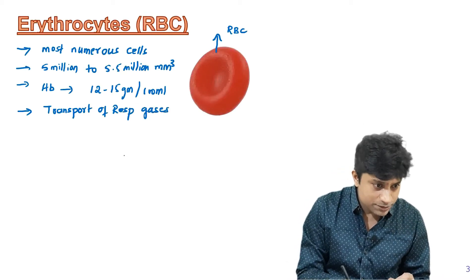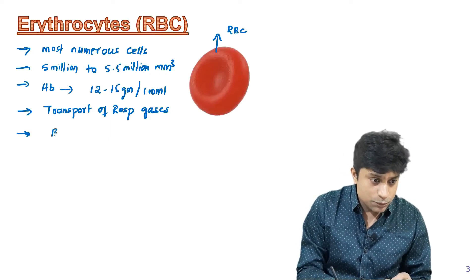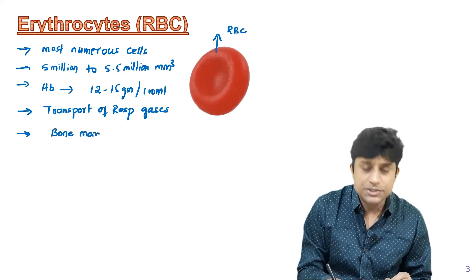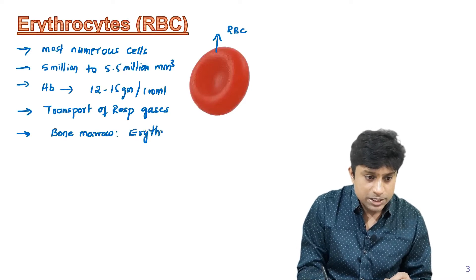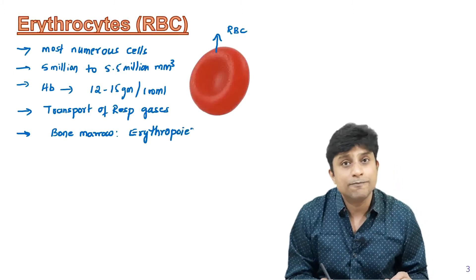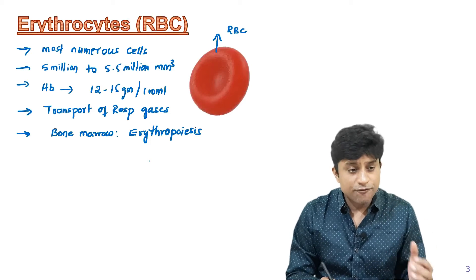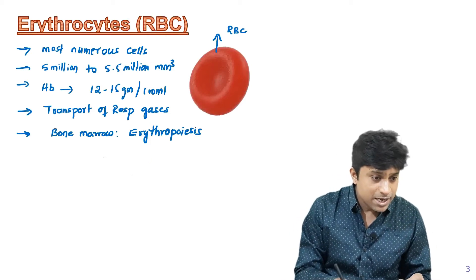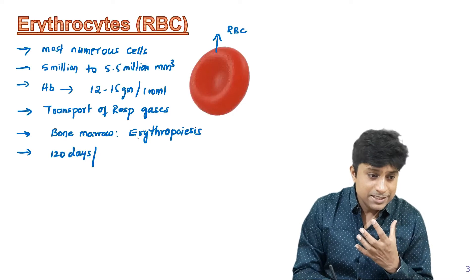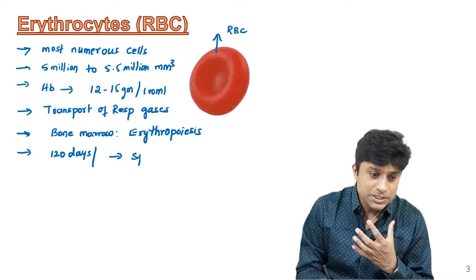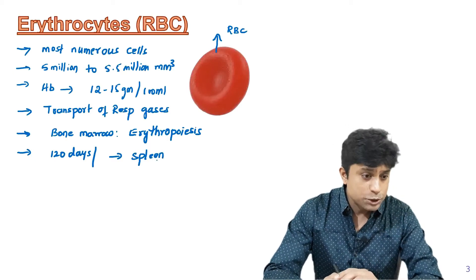RBC are formed in the embryonic stages and from the bone marrow. The process of formation of RBC is called erythropoiesis. In embryonic stages and earlier development, they are formed in the liver, and later on in the bone marrow. RBC live for 120 days, after which they are destroyed in the spleen — so the spleen is the graveyard of RBC.